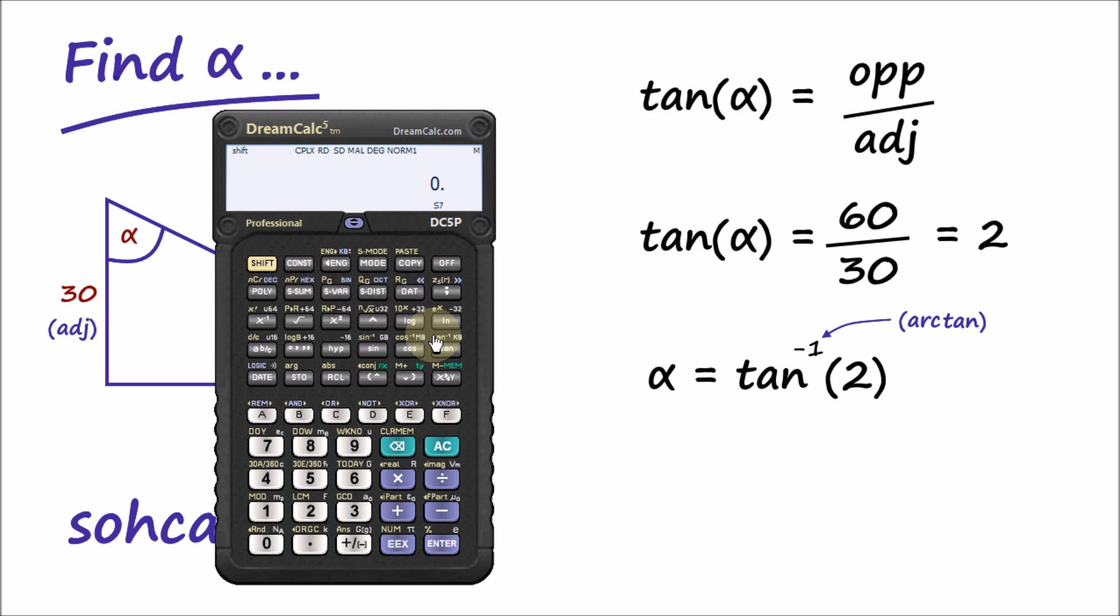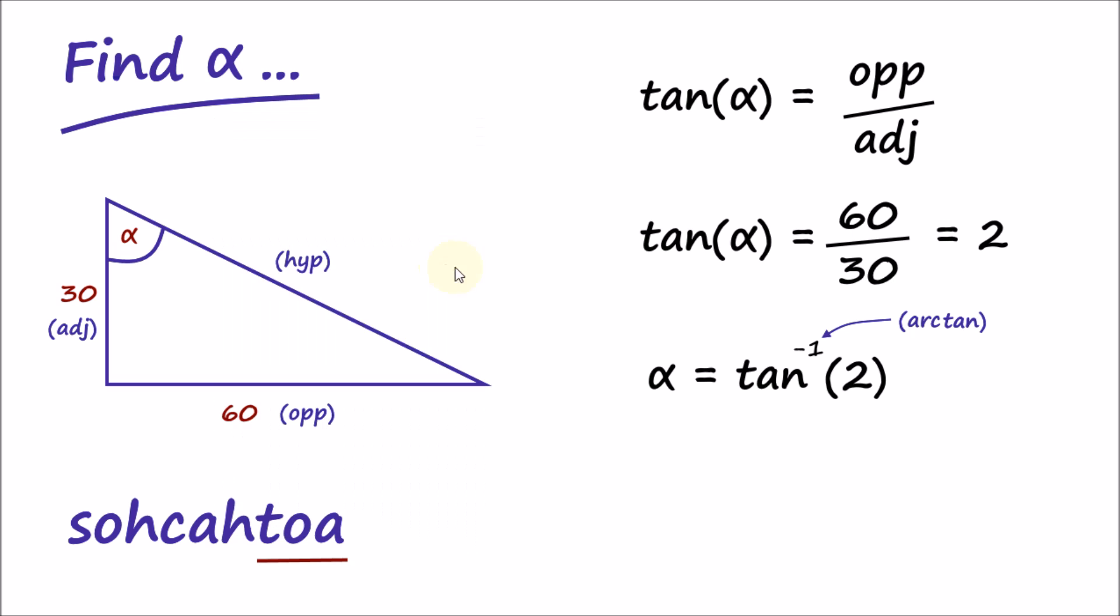All clear, shift, arc tangent, two, equals, 63.435. So, let's copy the result, copy, and paste it into the page to finish.